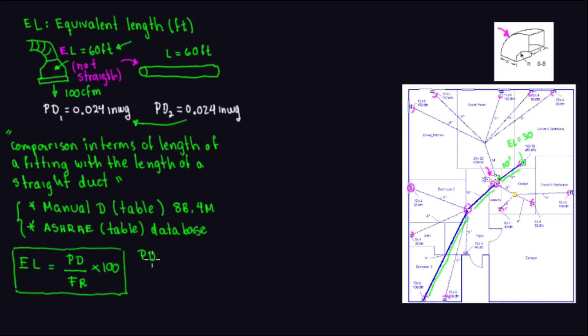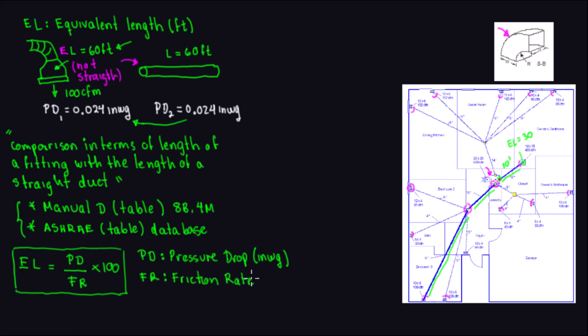In this formula, PD stands for pressure drop, measured in inches of water gauge or water column. FR is the friction rate. Since this is HVAC Is My channel, we won't go into the full Darcy equation, Colebrook equation, or Reynolds number details — we're just presenting the formula. The friction rate is used as a reference value in this calculation.